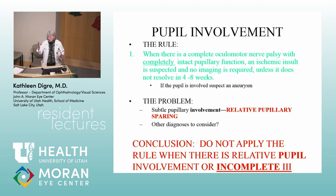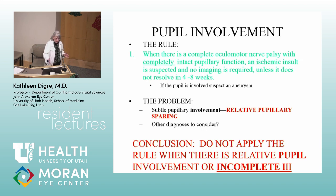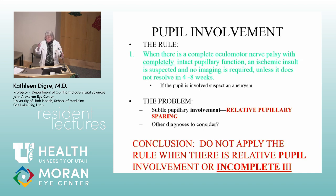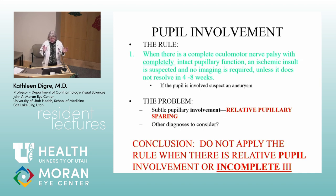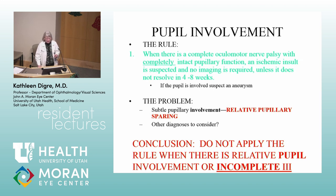Yesterday we saw a patient with a complete, painful third nerve palsy — no pupillary involvement. He couldn't look in, up, or down, and had a completely spared pupil. We were able to apply the ischemic rule. But if it's partial, you really need to be aware.